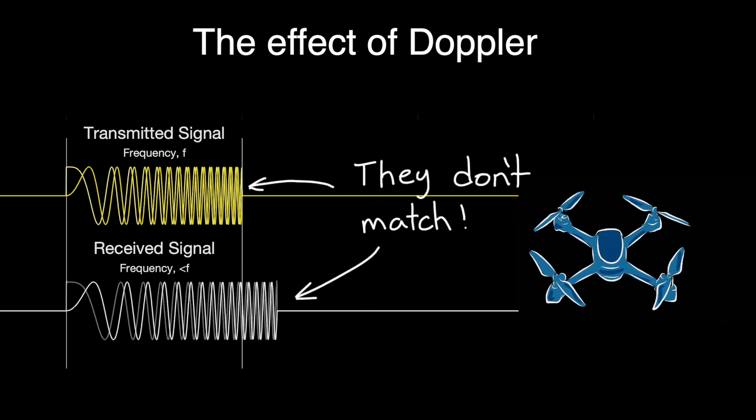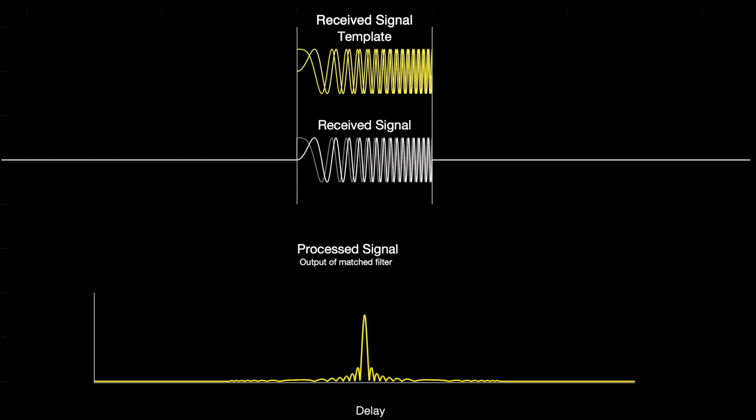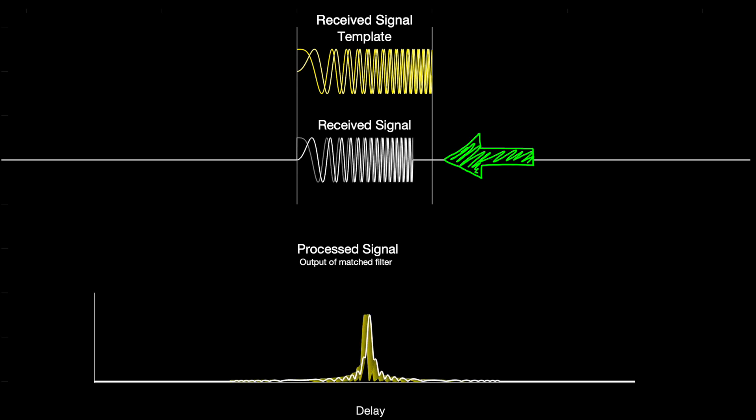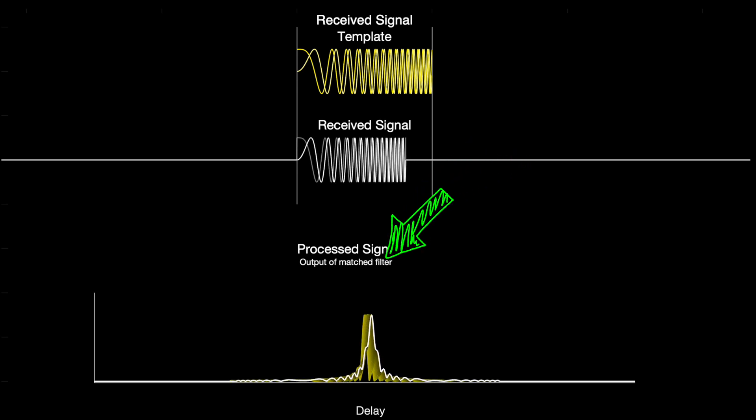Well, our matched filter won't match the returned pulse if it has been Doppler shifted. And this mismatch affects how well correlated the two signals are. I mean, watch what happens when I start to add Doppler and increase the frequency of the returned pulse. As the frequency increases, the peak starts to move.